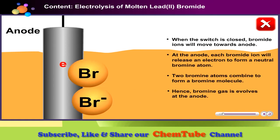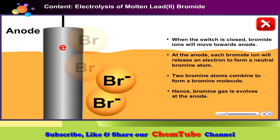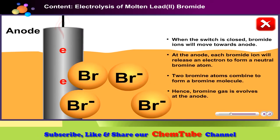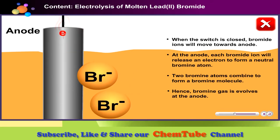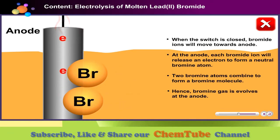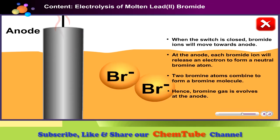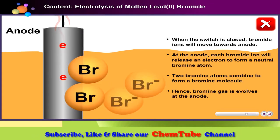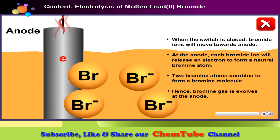At the anode each bromide ion is discharged. Each bromide ion will release one electron to anode to form bromine atom. Two bromine atoms combine to form a bromine molecule. Hence bromine gas evolves at the anode.